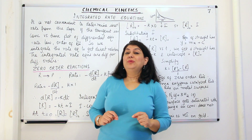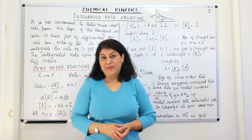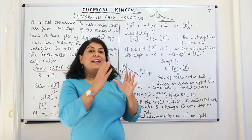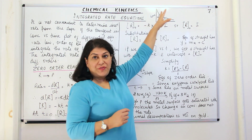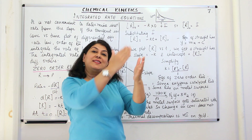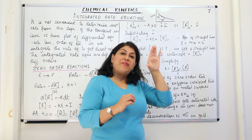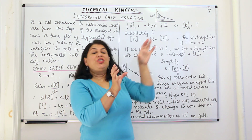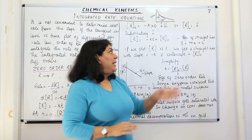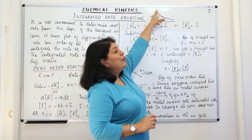Do you remember in part 2 I had tried to explain how we find out the rate of a reaction? For that we plotted curves and graphs with the concentration of the reactant or the product versus time. When we plotted these curves, we said that the change in concentration of the reactant divided by the time in which the change took place would give you the rate of the reaction.